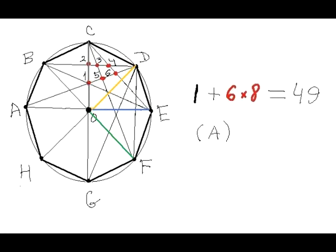Thus, the total number of all points of intersection of diagonals of this octagon is 6 times 8 plus 1 equals 49. The answer is A.